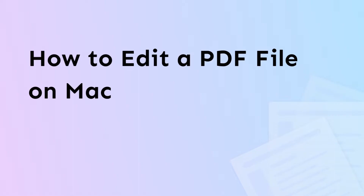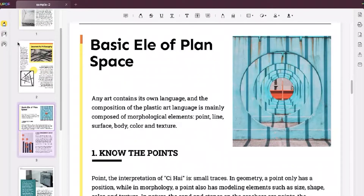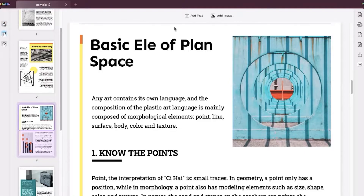First, open your PDF file with UPDF and then click the edit button on the top. Now you can start editing text and images.